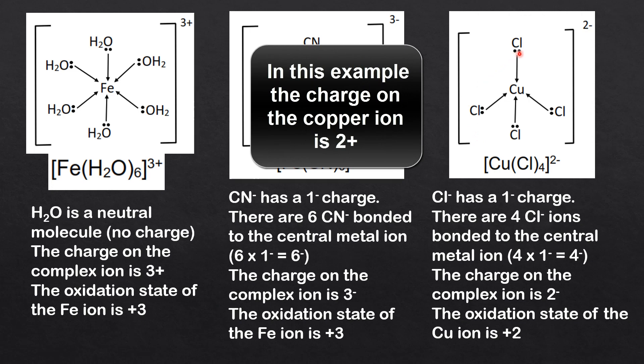Our last example has the chloride ion as the ligand. The chloride ion has a 1 negative charge. There are 4 chloride ions bonded to the central metal ion, giving us a total negative charge of 4 times 1 negative equals 4 negative.